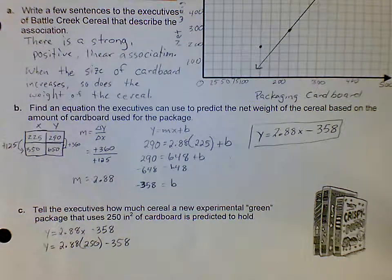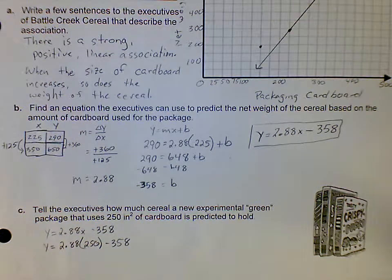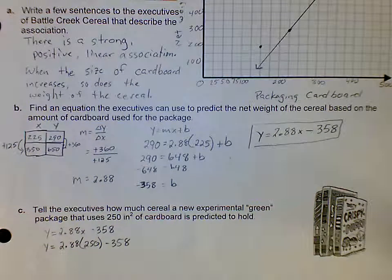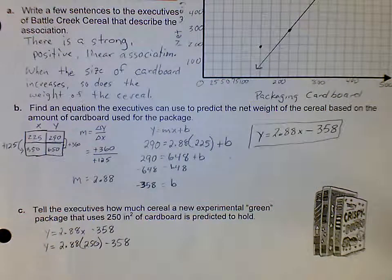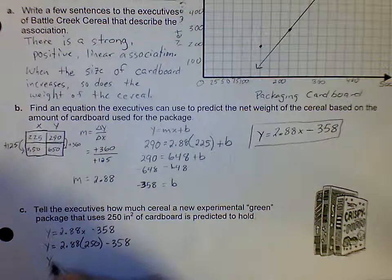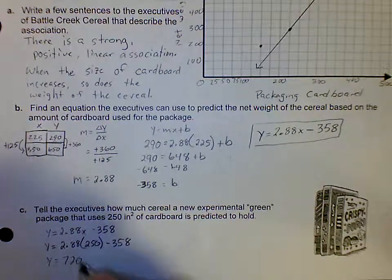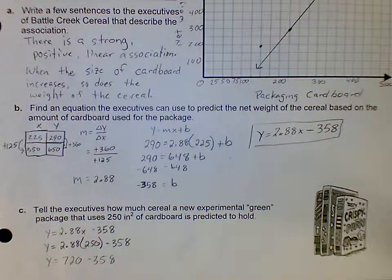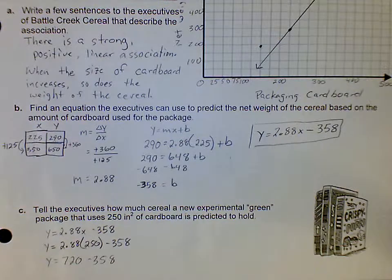Now I need to calculate due to order of operations, do the multiplication. So 2.88 times 250 is going to give me 720. So y equals 720 minus 358, and when I do that subtraction on my calculator you get 362 grams for my net weight, 362 grams.